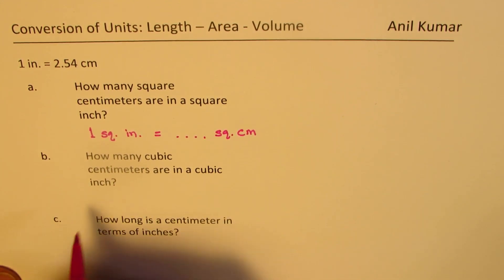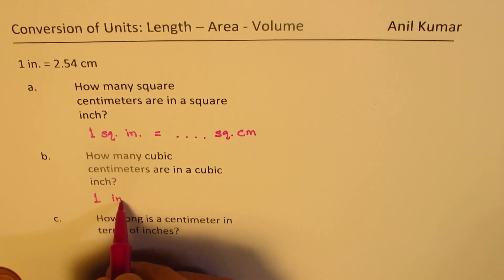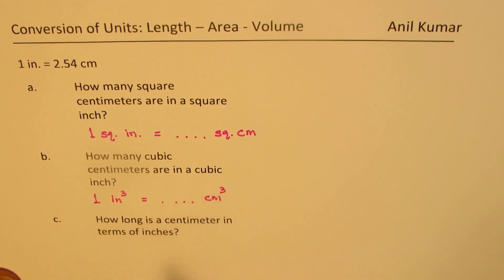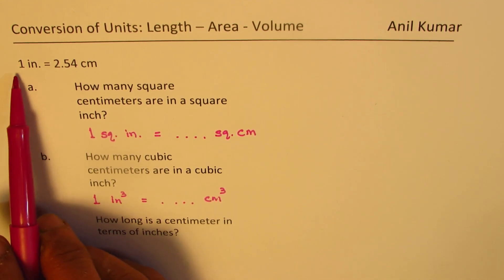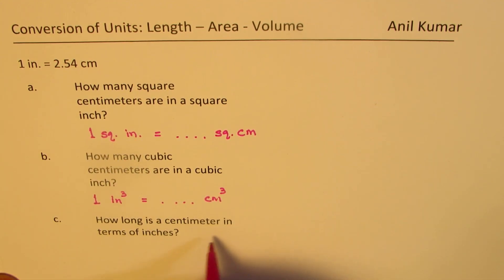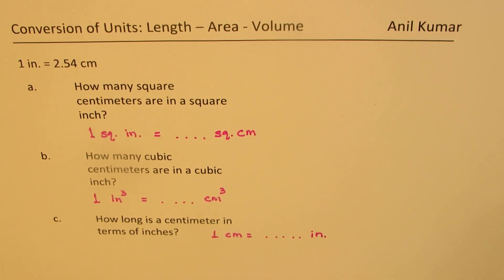Part B is: how many cubic centimeters are in a cubic inch? We could write cubic inch as one inch cube — how many centimeter cubes do we have? Part C is: how long is a centimeter in terms of inches? We are given one inch is 2.54 centimeters, and we want to find out what one centimeter equals in inches.